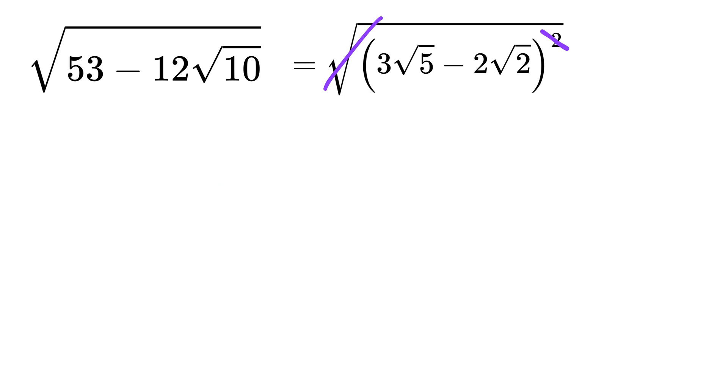After canceling, we are left with a very clean result. The simplified form becomes 3 times the square root of 5 minus 2 times the square root of 2.